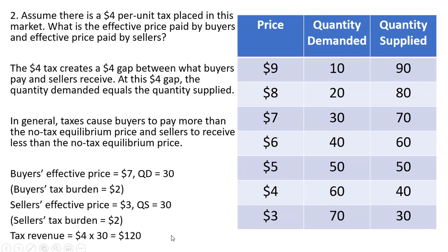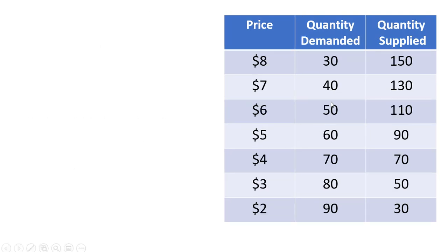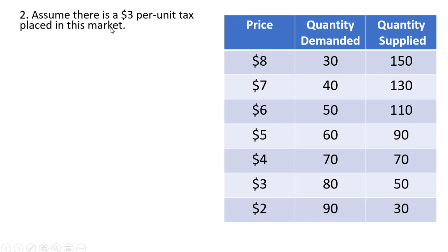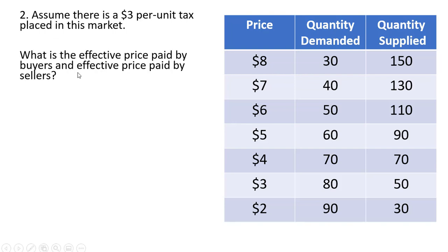Let's move on to another example. Slightly different numbers here — the equilibrium price is $4 and the equilibrium quantity is 70. Let's assume there is a $3 per unit tax this time in this market. What is the effective price paid by buyers and the effective price paid by sellers? The equilibrium price without a tax is $4; we expect buyers to pay more and sellers to receive less. So we're trying to find a $3 gap between what buyers pay and sellers receive where the quantity demanded equals the quantity supplied.